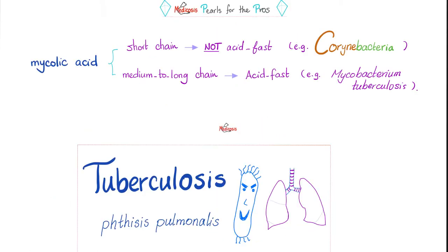This is important. Quick notes about mycolic acid: if a bacterium has short-chain mycolic acid in the cell wall, then it's probably not acid-fast. But if a bacterium has medium-to-long-chain mycolic acid, it is probably acid-fast. The example of the former is Corynebacteria; the example of the latter is Mycobacteria.